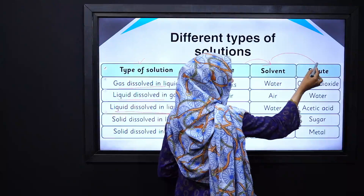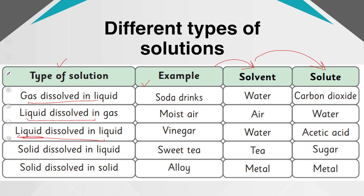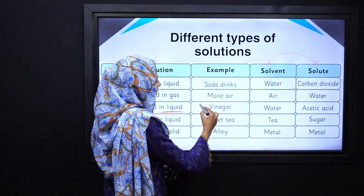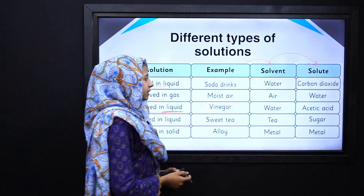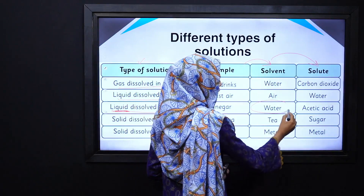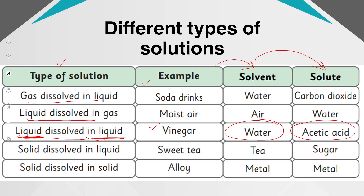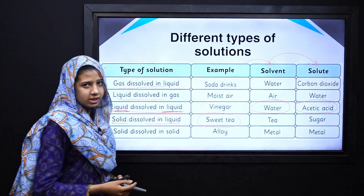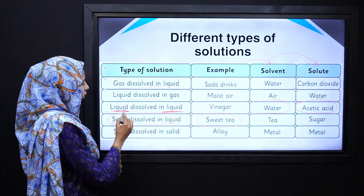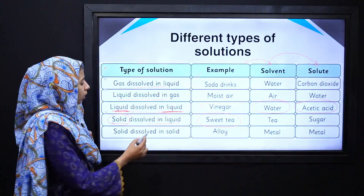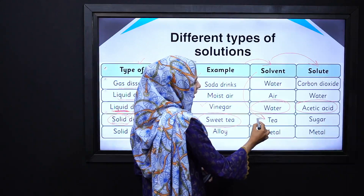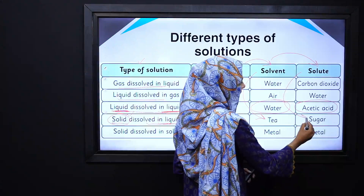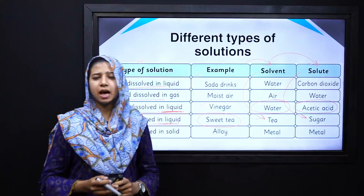Let's take one example of liquid dissolving in liquid. We have vinegar — we can call it acetic acid. If we look at the solvent, it is water, and the solute is acetic acid. For solid dissolved in liquid, an example is sweet tea: if a solid is dissolved in liquid, the solid must be the solute. So sugar particles act as the solute, and tea acts as the solvent. In this way we have various examples of solute and solvent.